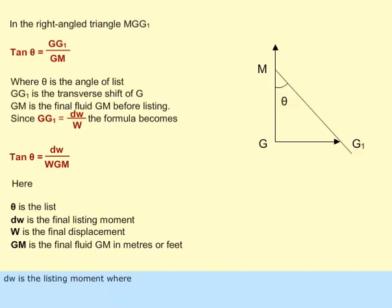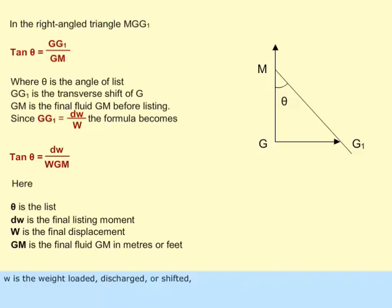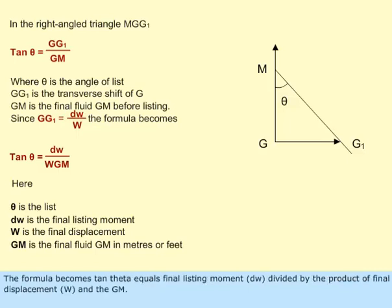DW is the listing moment, where D is the transverse distance of the weight loaded or discharged from G, or the transverse distance of the weight shifted, and W is the weight loaded, discharged, or shifted. GG sub 1 equals the final listing moment DW divided by displacement W. The formula becomes: tan theta equals final listing moment DW divided by the product of final displacement W and GM.